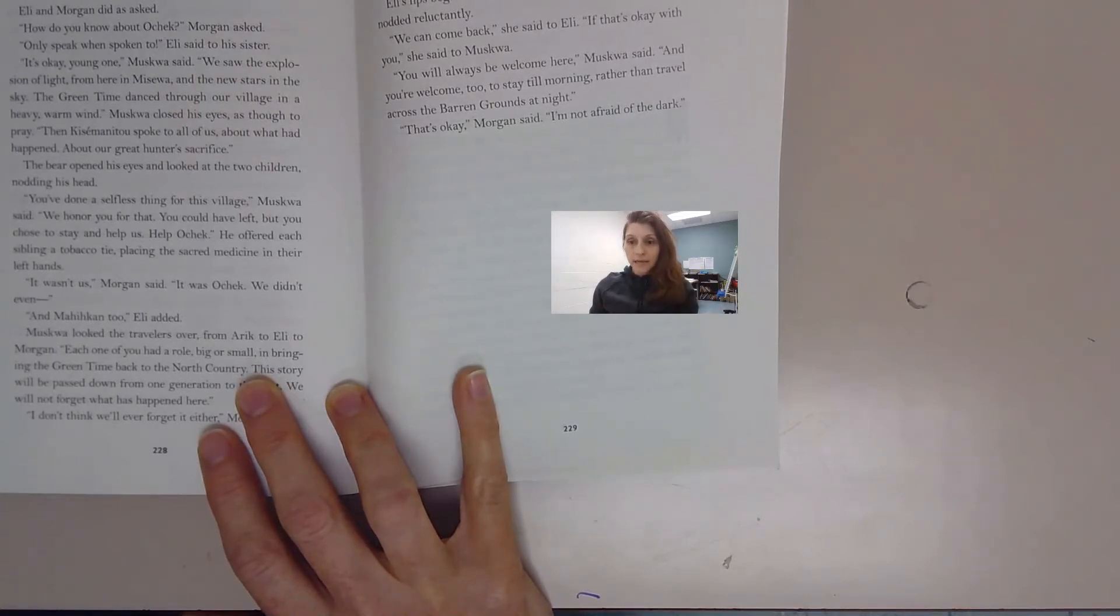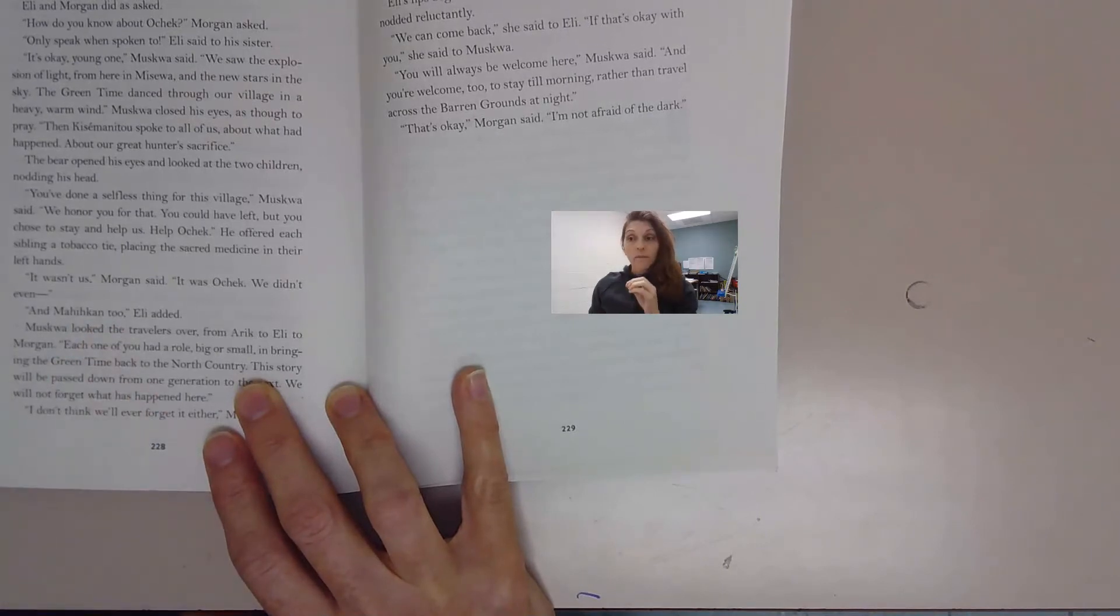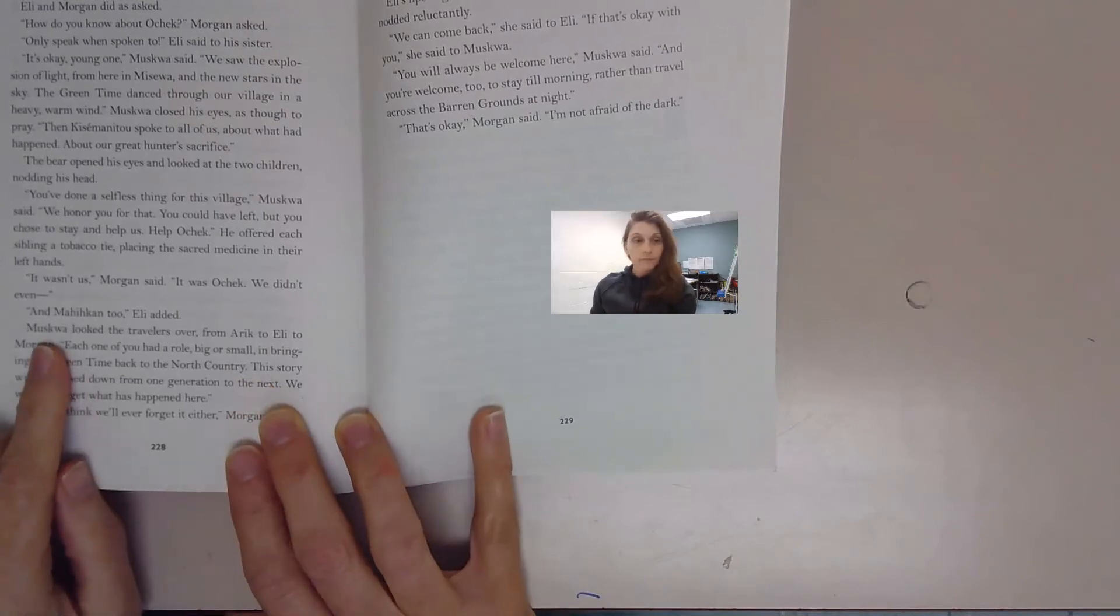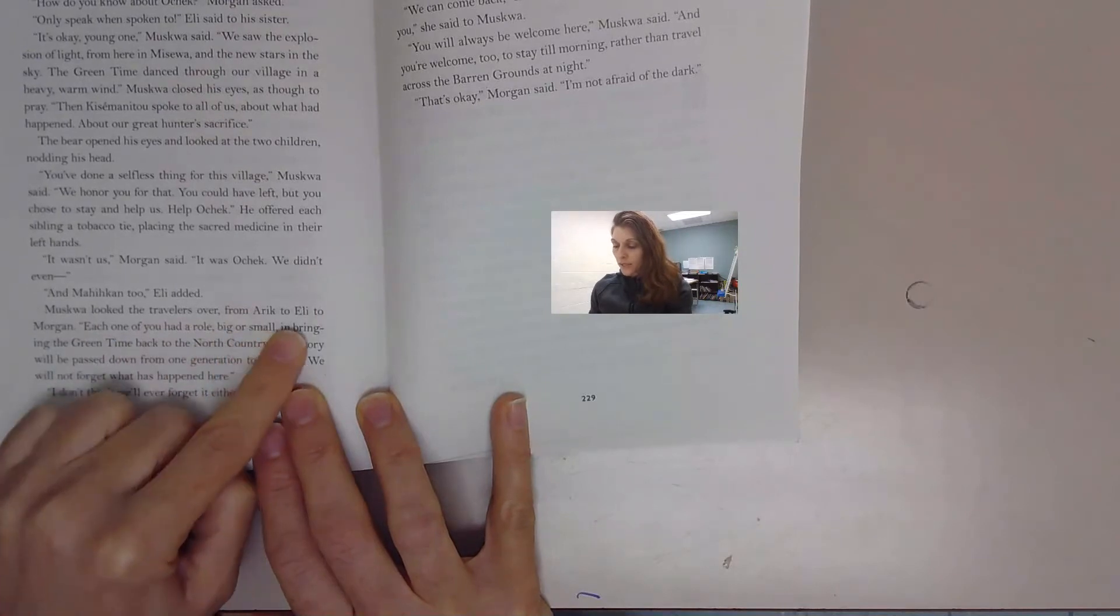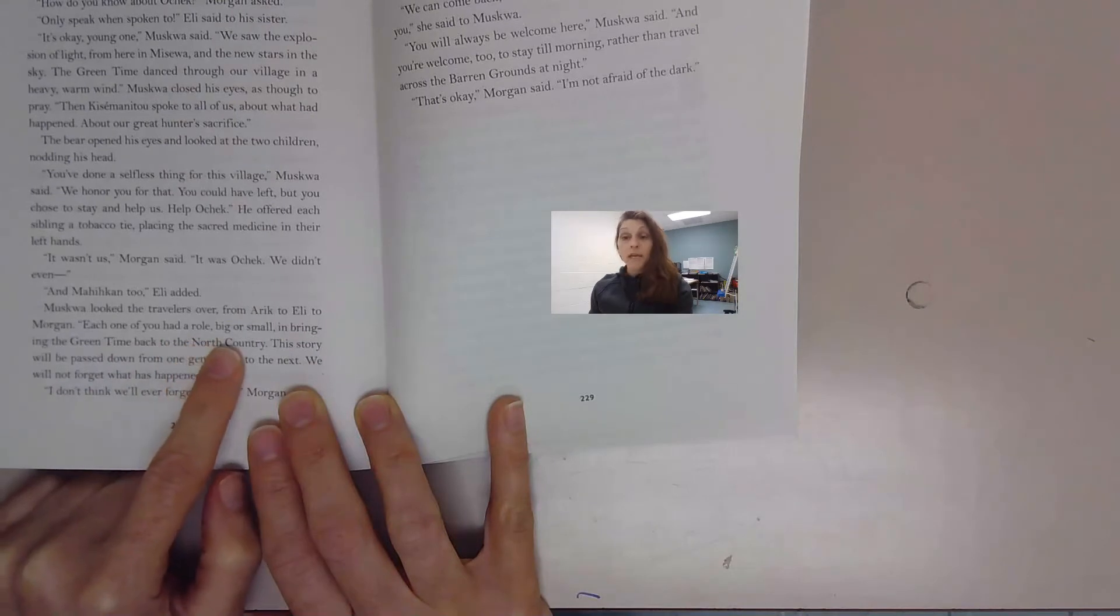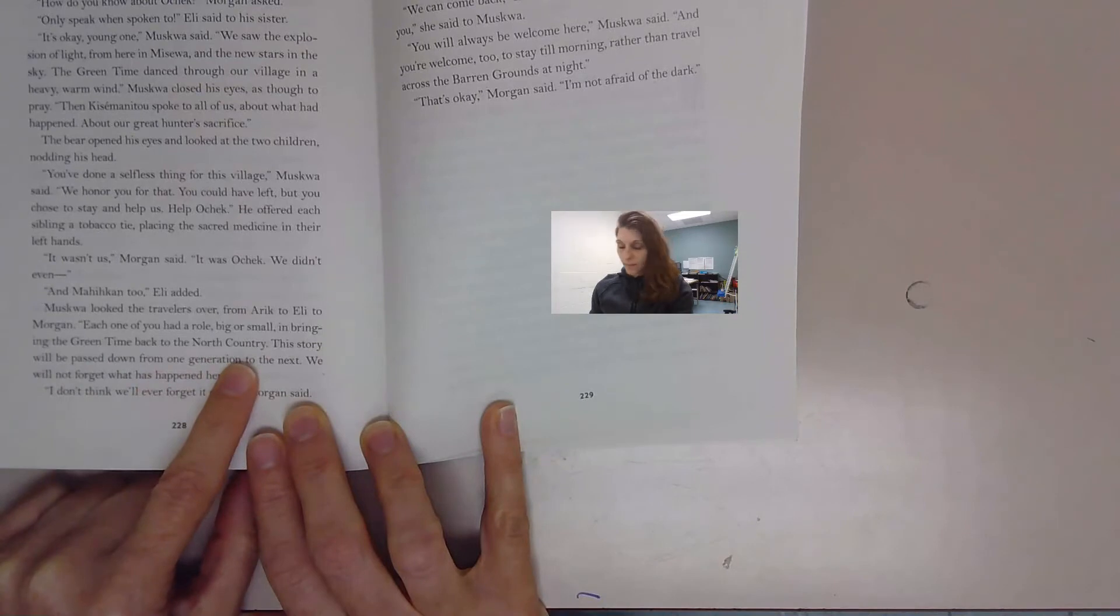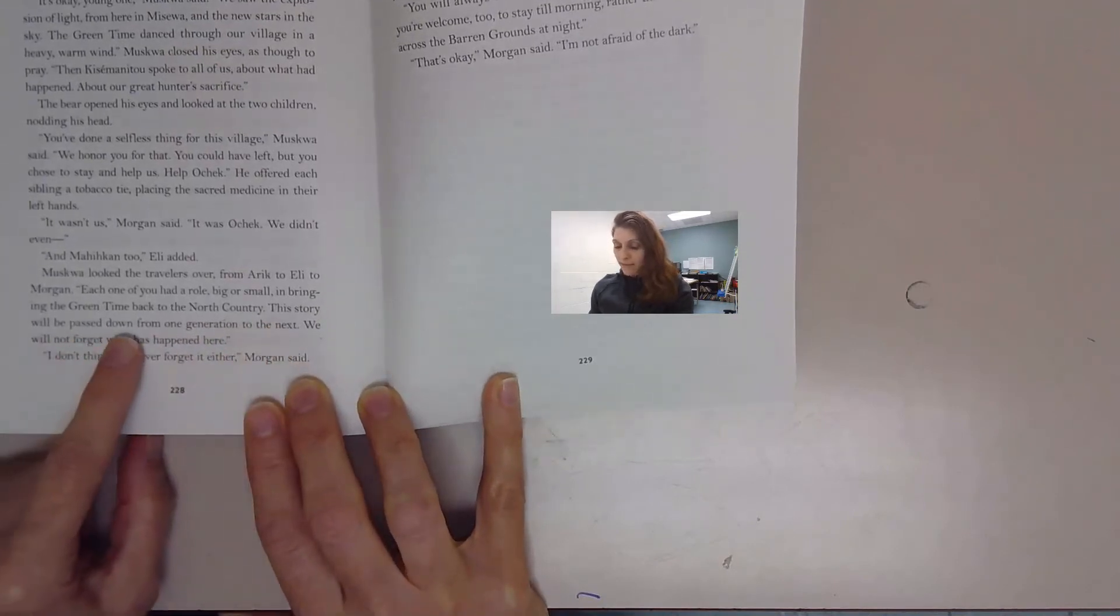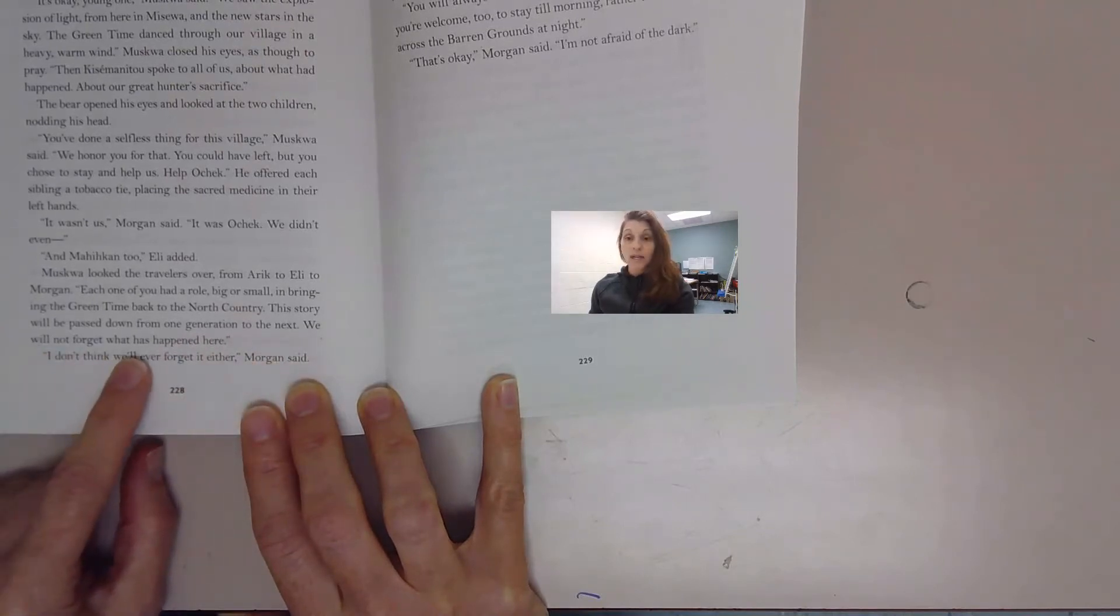The wolf made a mistake, did do wrong, but in the end, Mahikain, the wolf, did right. He did the right thing. Muskwa looked the travelers over, from Eric, to Eli, to Morgan. Each one of you had a role, big or small, in bringing the green time back to the North Country. This story will be passed down from one generation to the next. We will not forget what has happened here.